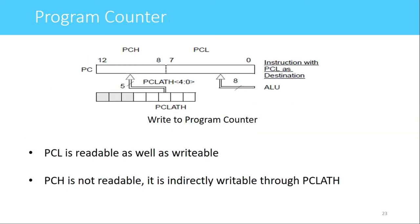The program counter stores the address of the next instruction to be fetched. These instructions are fetched from flash program memory, which has a capacity of 8 kilobytes, requiring 13 address lines. The program counter is divided into two parts: PCH and PCL. PCL is the lower 8 bits of the program counter, whereas the upper 5 bits are called PCH. PCL can be directly read and written using instructions.